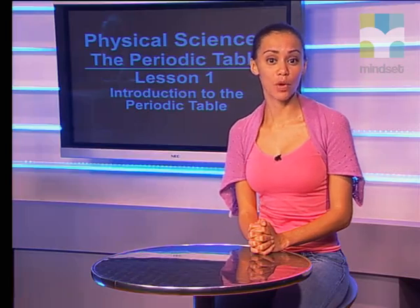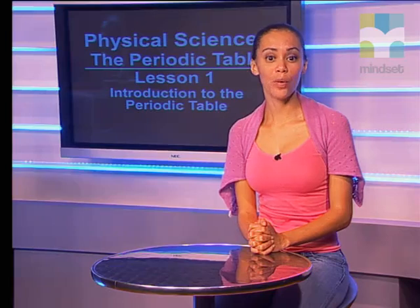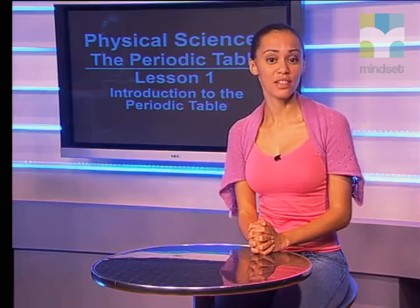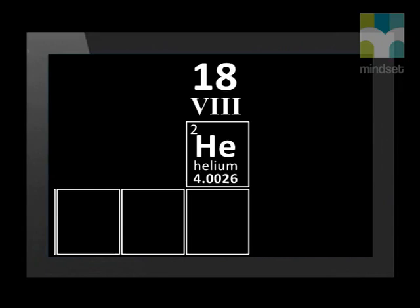The first element we come across in the top left corner is hydrogen. It has atomic number 1 and its symbol is H. We will work our way across the periodic table from left to right. The next block you come to is all the way on the right — this is helium, with atomic number 2 and the symbol capital H, lowercase e.